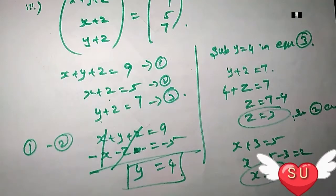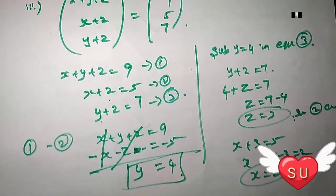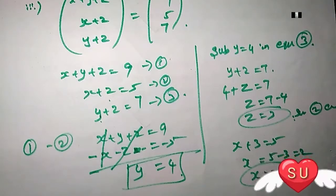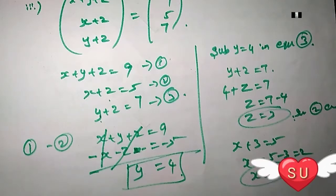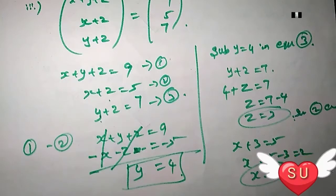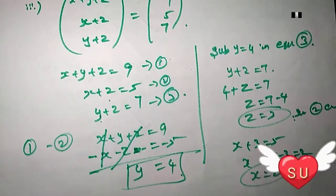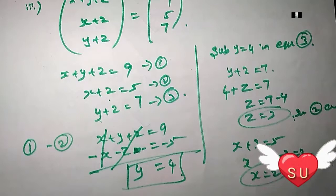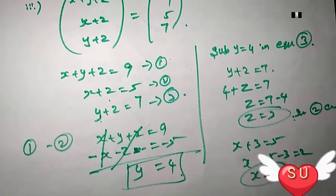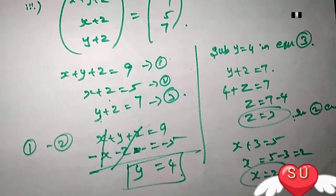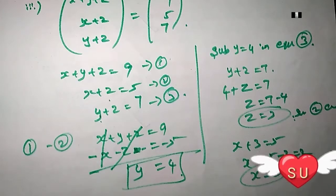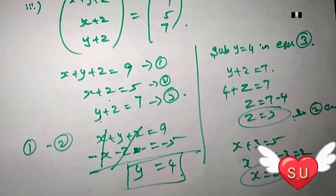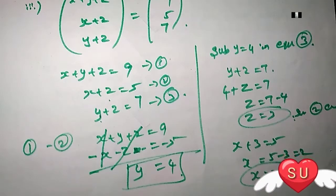Z equals 3. This is very easy. You can apply addition and subtraction method here. I hope this helps my new friends. Thank you.